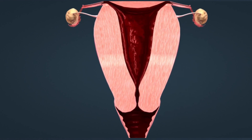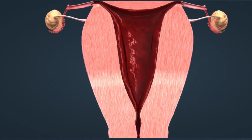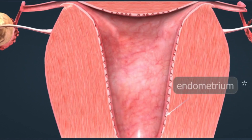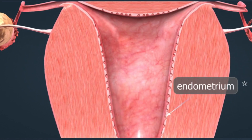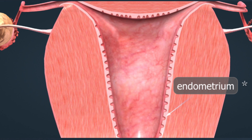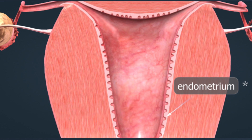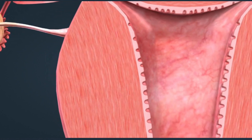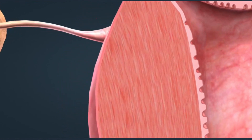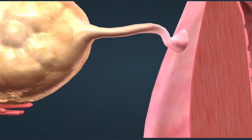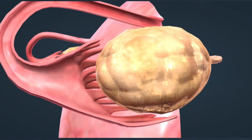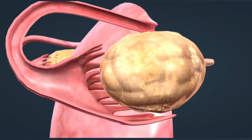After menstruation, the newly formed endometrium starts thickening. Right after menstruation, it is only about 0.5 millimeters thick, while on the 14th day of the cycle, during ovulation, it grows to about 3 to 5 millimeters.